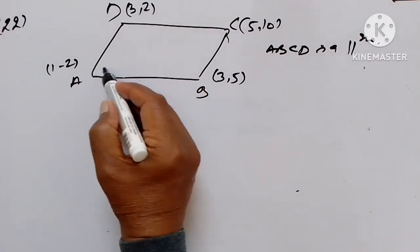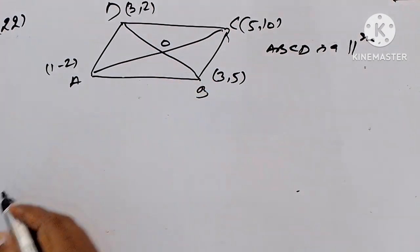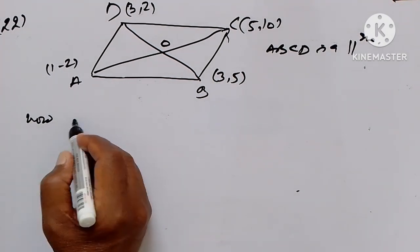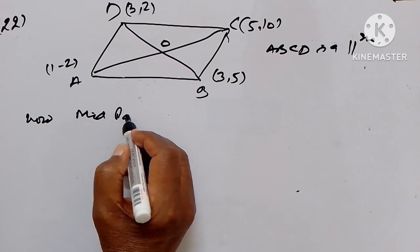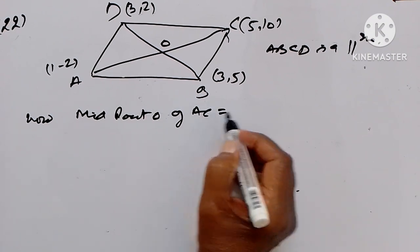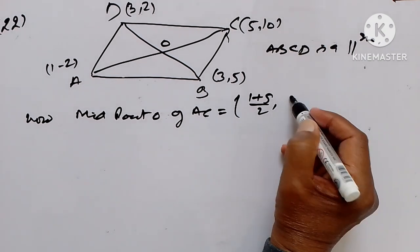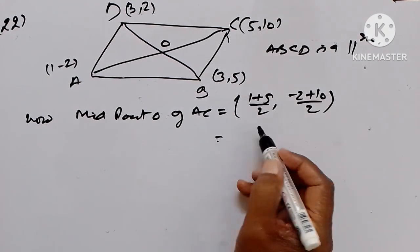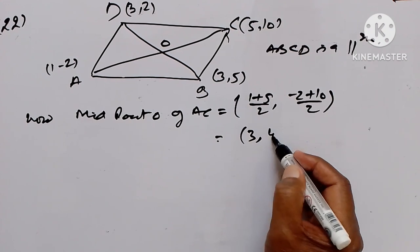Now, midpoint O of AC is equal to (1+5)/2 and (-2+10)/2, which equals 6/2 = 3, and 8/2 = 4. So the midpoint of AC is (3, 4).